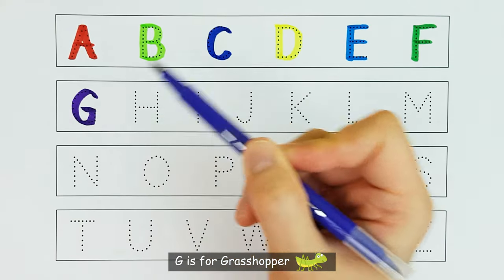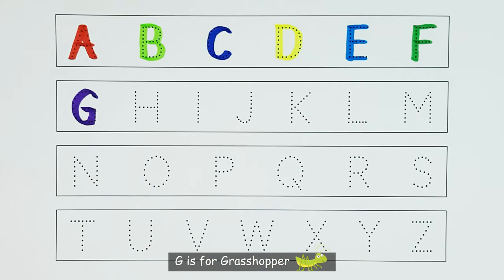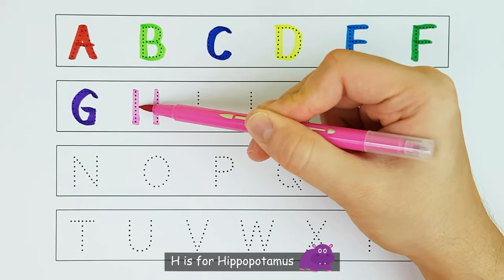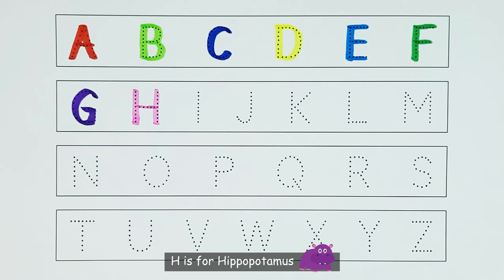G. G is for Grasshopper. G. H. H is for Hippopotamus. H.